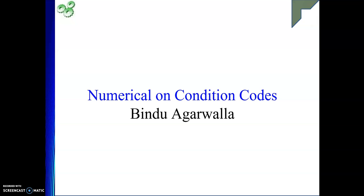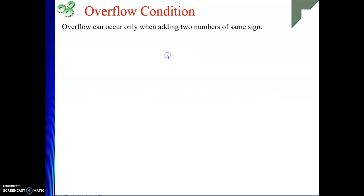Hello friends, once again I welcome you to my channel. Last video we have seen the condition code or status register, where it is a collection of various bits as indicators of various conditions that may occur after one instruction is executed. We have seen examples for carry, overflow, sign or negative flag, and zero flag.